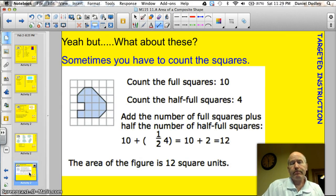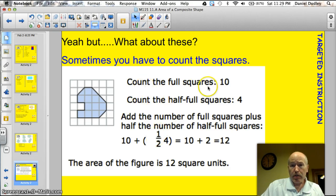Yeah, but what about these? There are a couple of different yeah buts tonight. Sometimes you'll be given a shape that looks like this and you need to find the area. In this instance, count the full squares. 1, 2, 3, 4, 5, 6, 7, 8, 9, 10. And then count the half squares. Here I've got 1, 2, 3, 4. So I've got 10 full squares plus 4 half squares. 4 halves are like 2, so I end up with 12 square units.